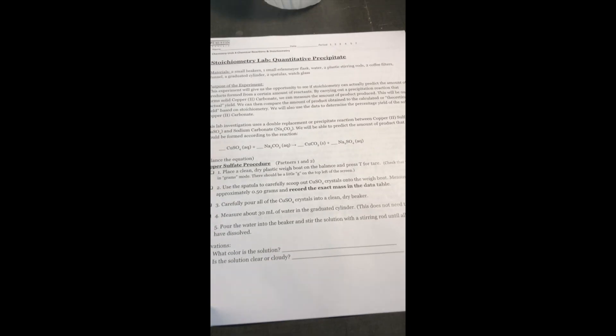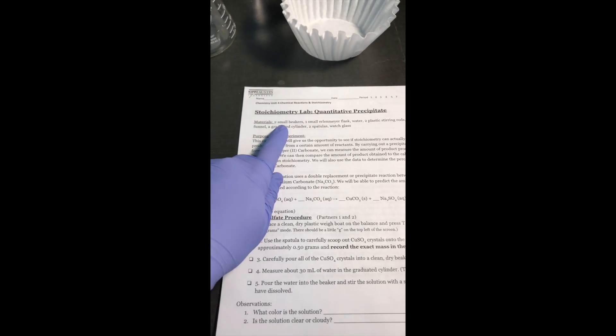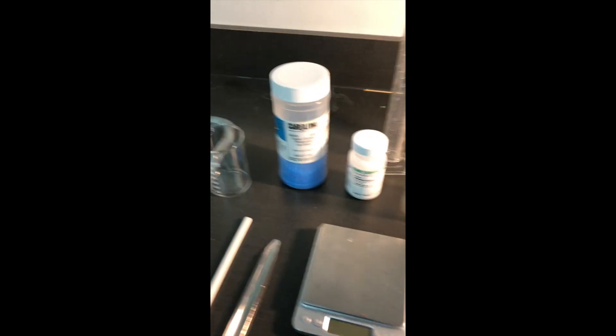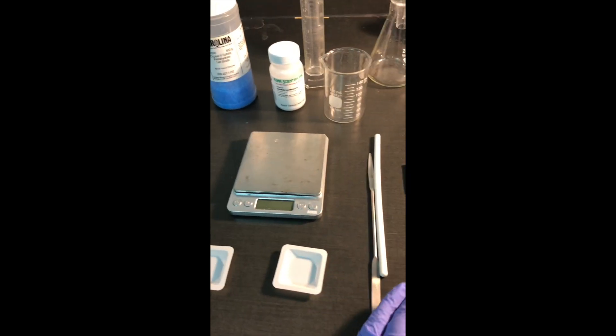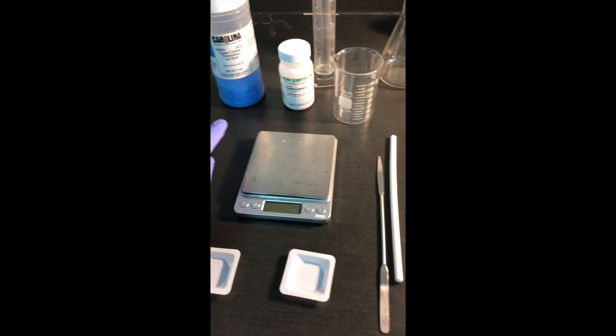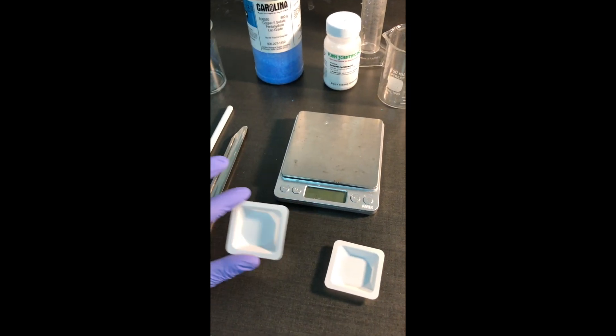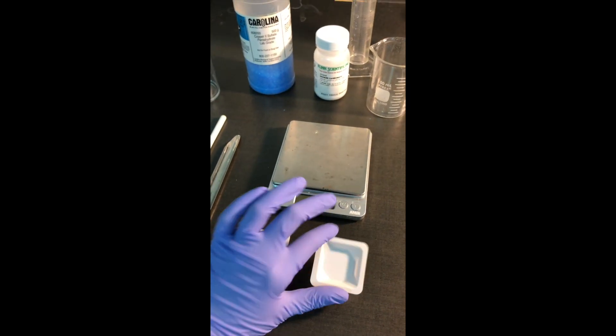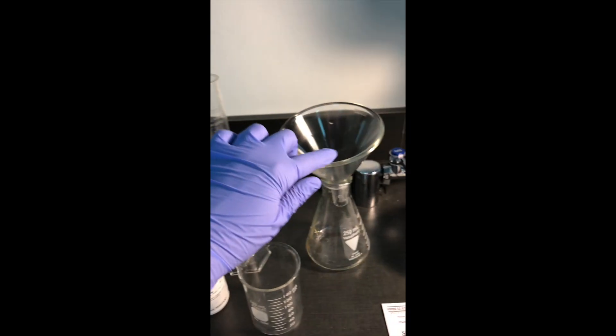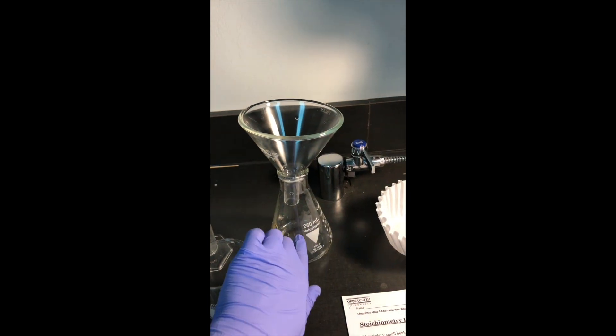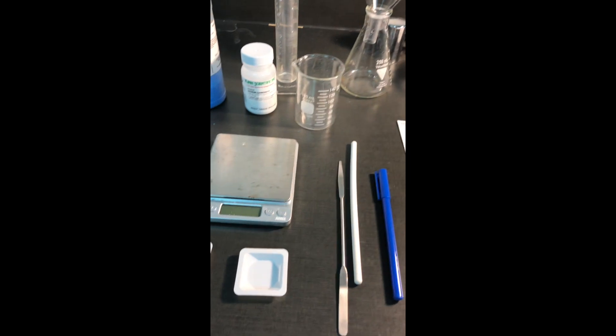Let's first make sure that we have all of the materials. We need two small beakers, a stirring rod and scoop or spatula for each of these solutions, two clean dry weighboats, a balance, a graduated cylinder, a funnel, an Erlenmeyer flask, and some coffee filters. That's everything we need to get started.